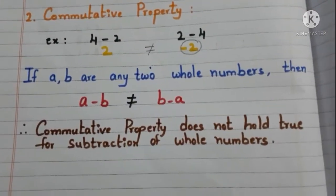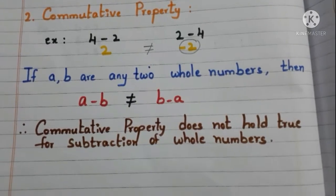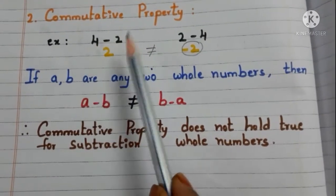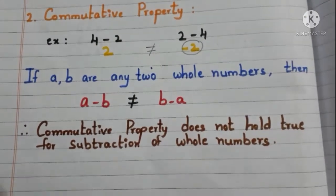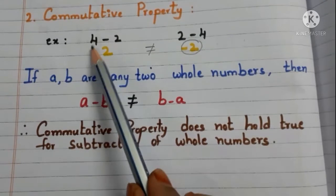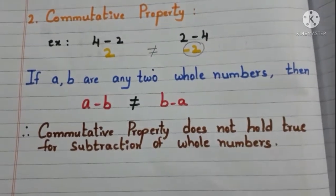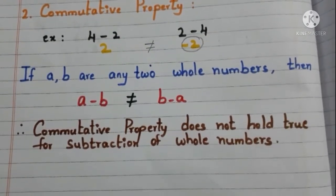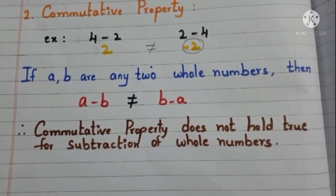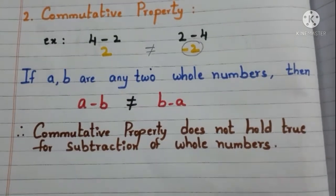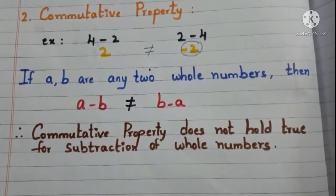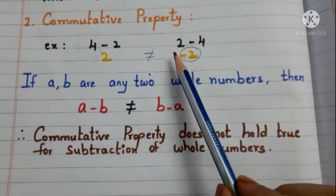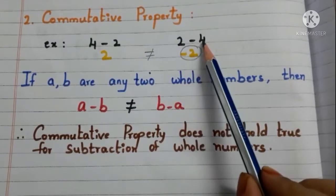Now, commutative property. Let us see with the example. Take 4 and 2 and find the difference. 4 minus 2 is 2. Now, change the order and find the difference — that means, change the minuend and subtrahend. Find the difference: 2 minus 4.